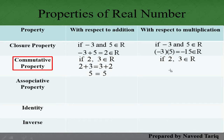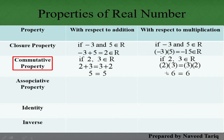Multiplication میں بھی Commutative Property دیکھیں: 2 multiply by 3 equals 3 multiply by 2۔ Place change کرنے سے answer میں کوئی فرق نہیں پڑتا — 2×3 بھی 6 ہوتا ہے اور 3×2 بھی 6 ہوتا ہے۔ یہ real numbers کی property ہے۔ یاد رہے کہ matrices میں multiplication کے ساتھ Commutative Property verify نہیں ہوتی، لیکن real numbers میں ہوتی ہے۔